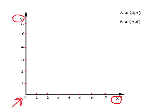Now suppose you are given a point like A, which is represented as (3, 4). Whenever we write numbers like this, remember this is an ordered sequence — the placing of each number has a meaning. The first number will always represent the value of X, and the second number will always represent the value of Y.